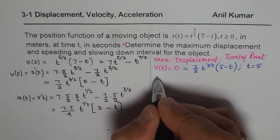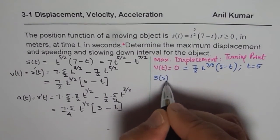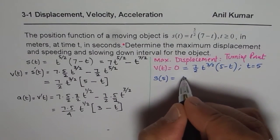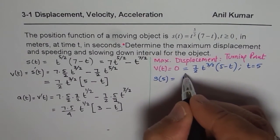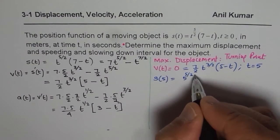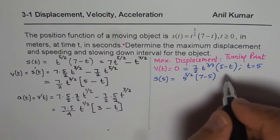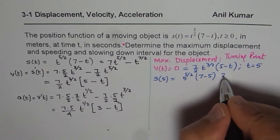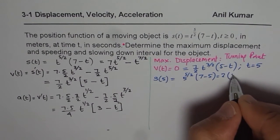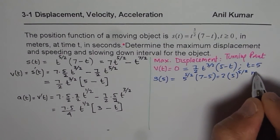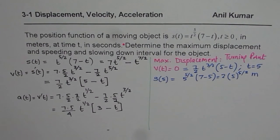So s(5) is the maximum displacement. Substituting t = 5 into the original function: s(5) = 5^(5/2) * (7 - 5) = 5^(5/2) * 2 = 2 * 5^(5/2) meters. You can use a calculator to find the numerical value.